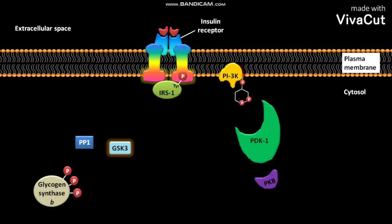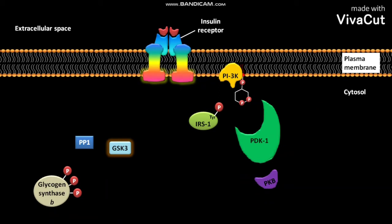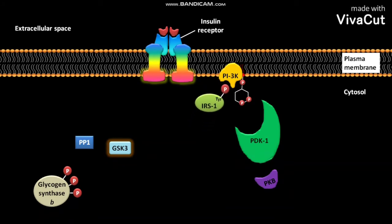The phosphorylated IRS-1 then leaves the activated tyrosine protein kinase in the receptor. The phosphotyrosine in IRS-1 then binds to an enzyme called PI3K.